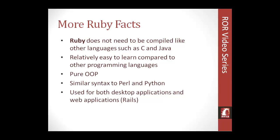Ruby is pure object-oriented. In Ruby, everything is an object — numbers, booleans — all treated as objects. But don't let that fool you. Ruby is actually a multi-paradigm language, so even though it's object-oriented, it also includes other types of paradigms such as functional and imperative.